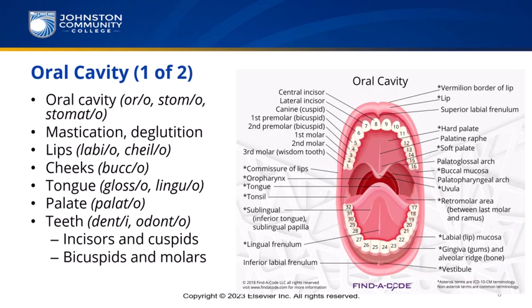The oral cavity is responsible for mastication — chewing — and deglutition — swallowing. The combining forms stomo and stomato refer literally to a mouth or opening. For the oral cavity we have oro, stomo, and stomato. For lips: labio and kylo. Cheeks: bucco. Tongue: glosso and linguo. Palate: palito. Teeth: dento or odonto.